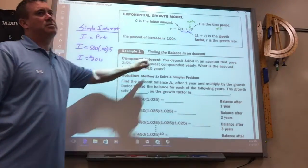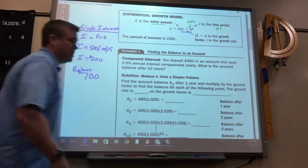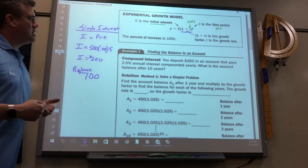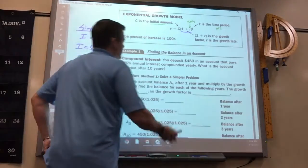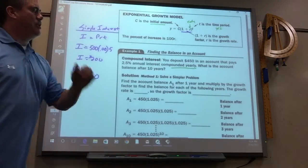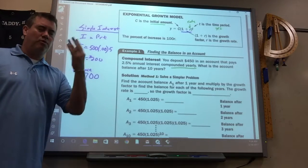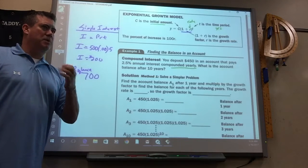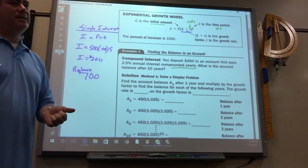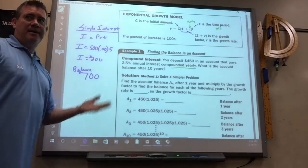They call it simple interest because it's not exact. Most things are compound which means it's compounded over and over and over again. There's different types of compound interest. There's yearly, like this problem. There's quarterly, which would be how many times a year? Four. There's monthly, which would be 12. And then there's daily compounded daily. That means every day they figure out your interest and add it on to what you started with.